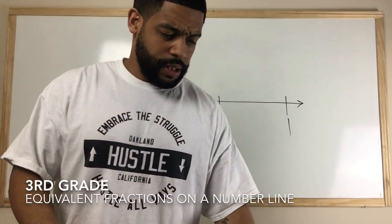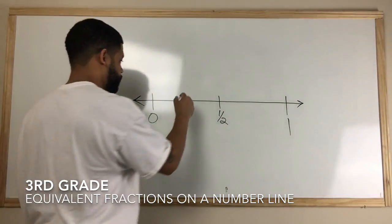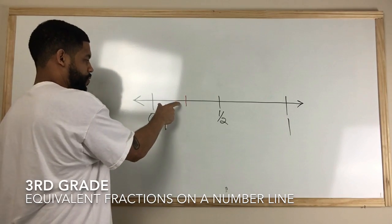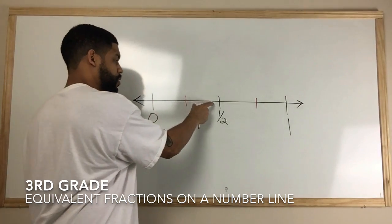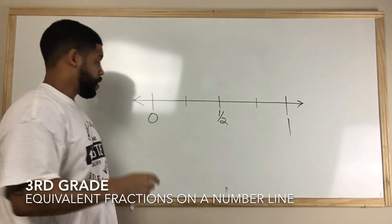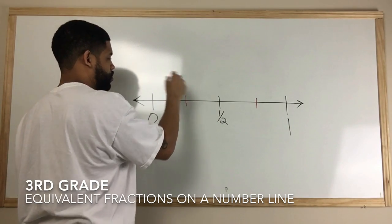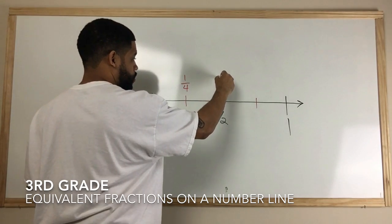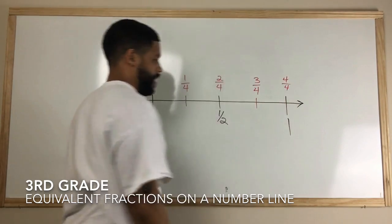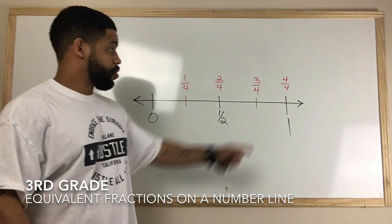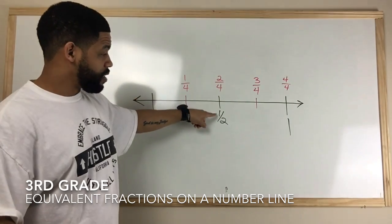To show equivalence, let's take this number line and break each half into two more pieces. I take this half and break it into two, then this half and break it into two as well, so we have a total of four pieces. I didn't change the original two pieces — I now have one fourth, two fourths, three fourths, and four fourths. Two out of four has the same value as one out of two, so those two are equivalent.